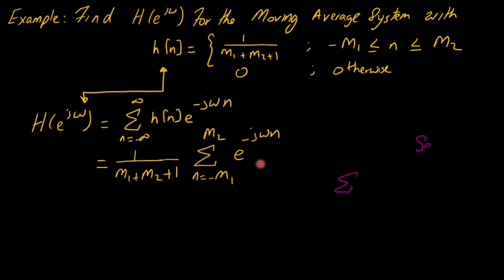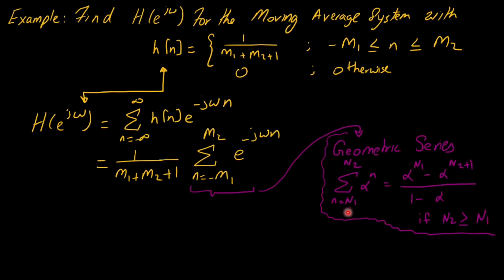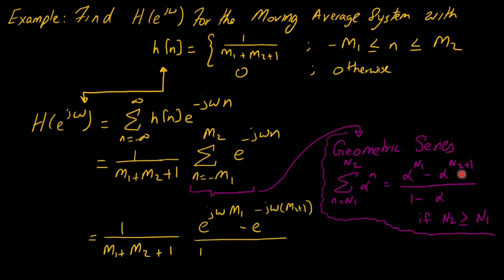Using the geometric series formula: the summation from n1 to n2 of α^n equals (α^{n1} − α^{n2+1}) / (1 − α), valid when n2 > n1. Applying this, we get e^{jωm1} − e^{−jω(m2+1)} over 1 − e^{−jω}, arriving at a closed form for the frequency response.